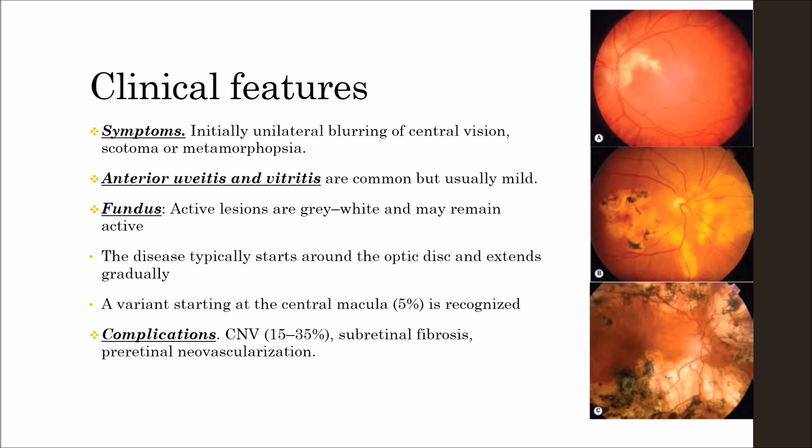On examination, there is anterior uveitis and vitritis, which are common but usually mild. Active lesions are grey-white and may remain active for several months before becoming scalloped and atrophic.